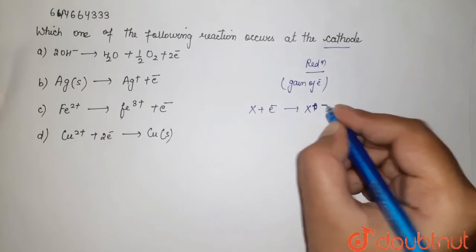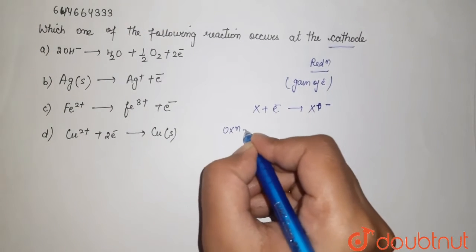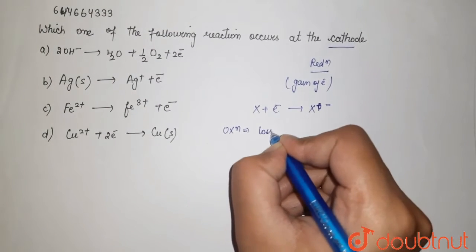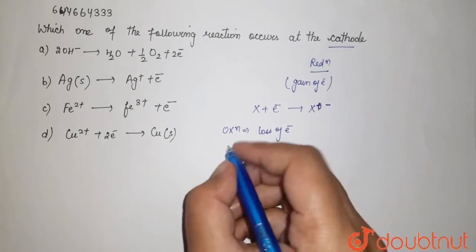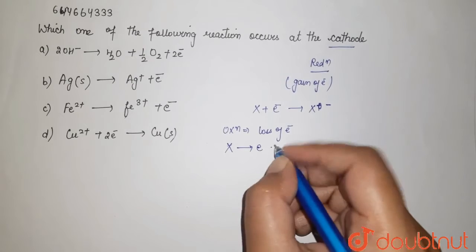Here it is an ion and there is one oxidation process which means there is loss of electron. If there is loss of electron, if species loses one electron, then what it forms?